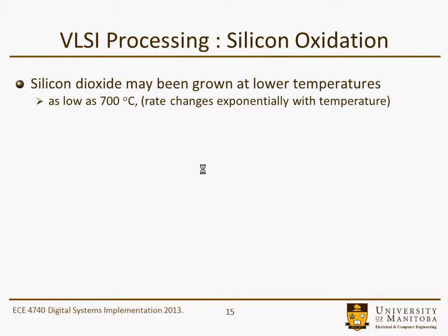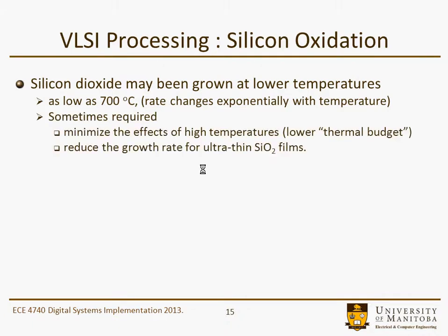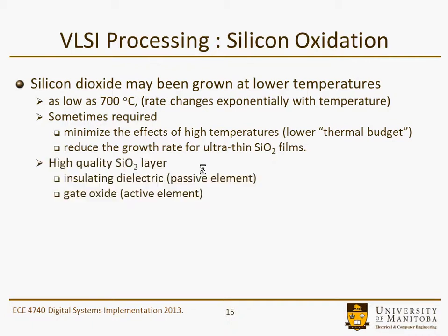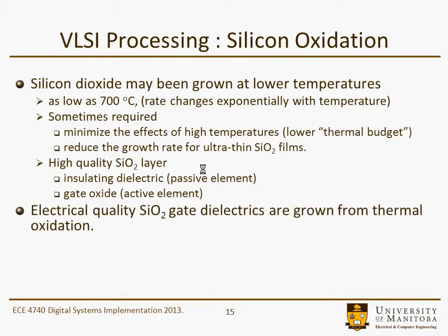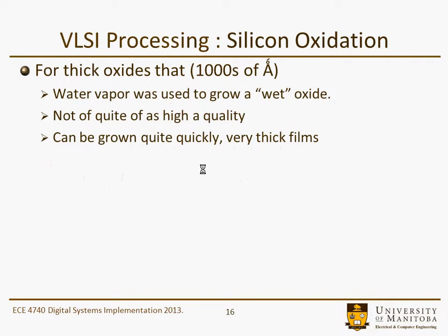Silicon dioxide can also be grown at lower temperatures, perhaps as low as 700°C. This changes the rate of growth considerably because the temperature is way down, but it may be required to grow some high-quality dielectrics — certainly for ultra-thin SiO2 films where you need a lot of control over the thickness. High-quality SiO2 is an insulating layer, typically used for the gate dielectric, and these are grown by thermal oxidation.